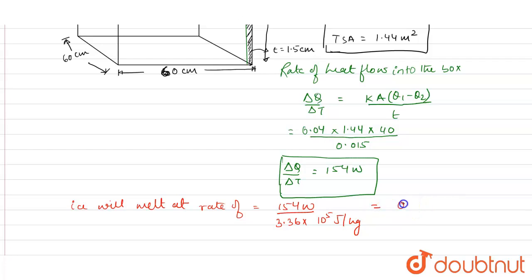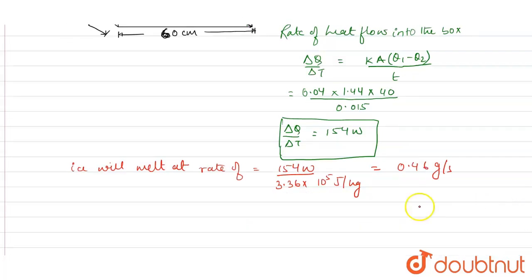From here what we get is 0.46 gram per second. So the rate at which ice melts is 0.46 gram per second, or 0.46 gram of ice melts in a second.